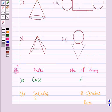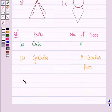Now in part C the given figure is a cone and cone has one circular face.